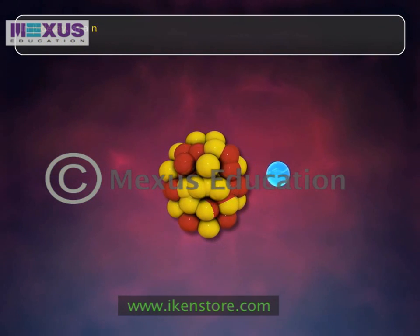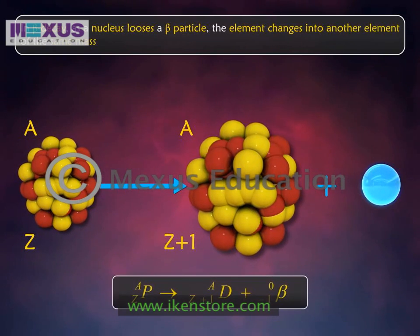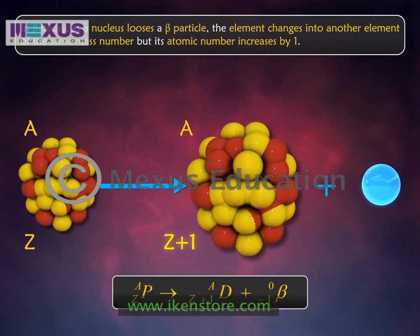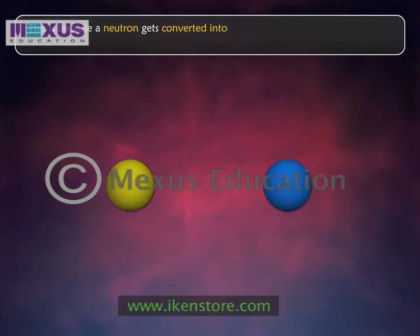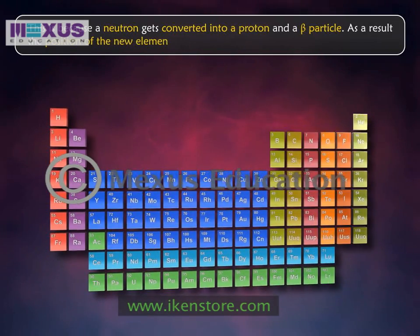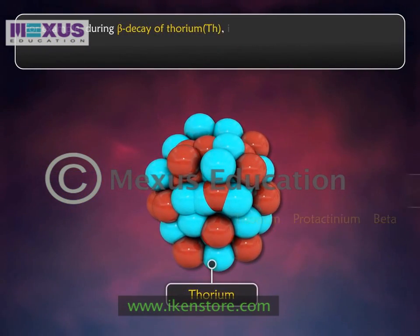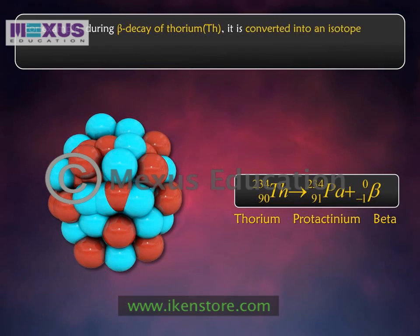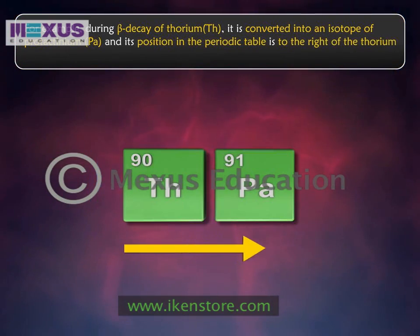In beta decay, as a nucleus loses a beta particle, the element changes into another element of the same mass number, but its atomic number increases by one. This is because a neutron gets converted into a proton and a beta particle. As a result, the position of the new element shifts one place to the right in the periodic table. For example, during beta decay of thorium, it is converted into an isotope of protactinium, and its position in the periodic table is to the right of the thorium isotope.